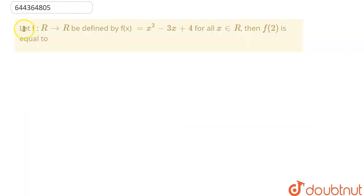We are given here the question that let f is from R to R be defined by f(x) equal to x square minus 3x plus 4 for all x belongs to real number. Then f of 2 is equal to what?